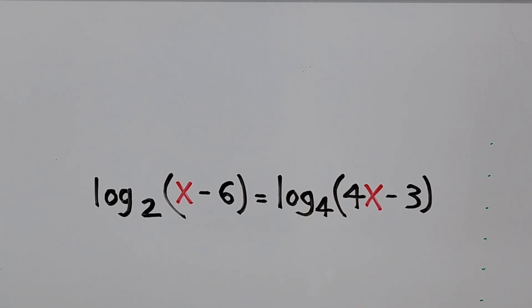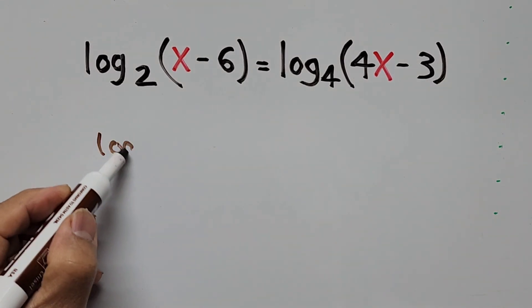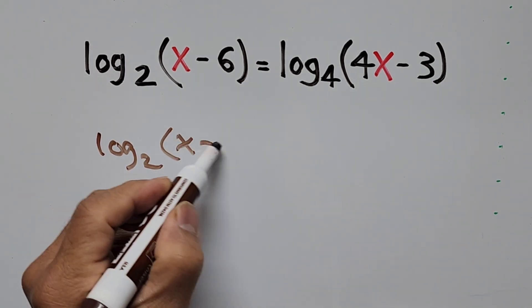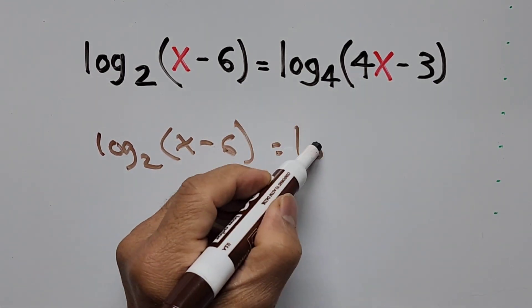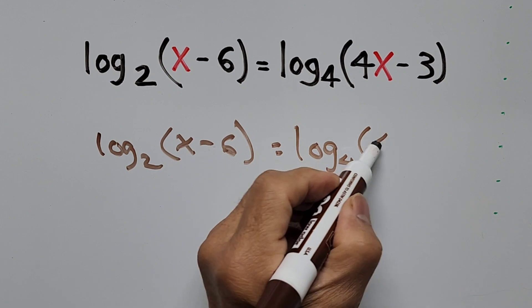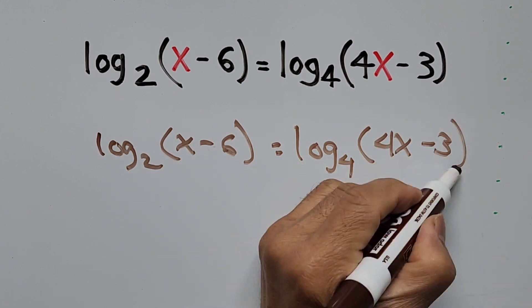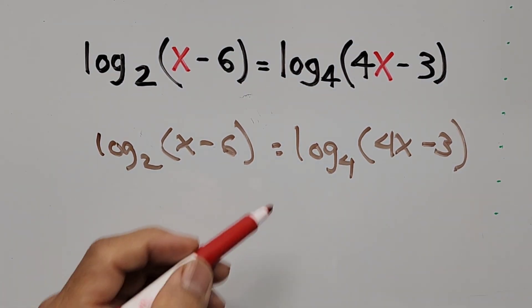Hello everyone, we have here a logarithmic equation to solve for the values of x. We have log base 2 and base 4, so how are we going to solve the equation? We have log base 2 of (x - 6) equals log base 4 of (4x - 3).